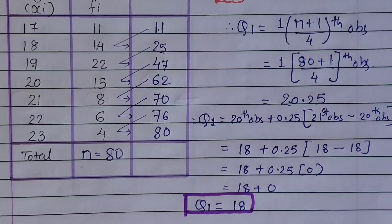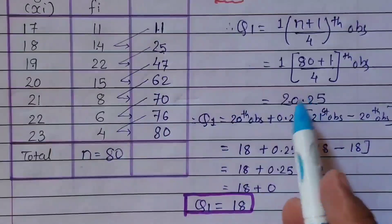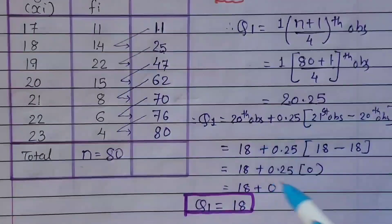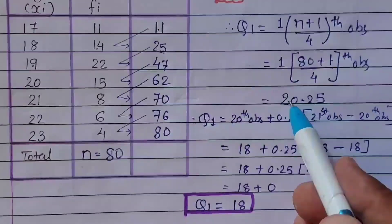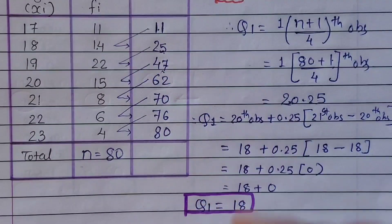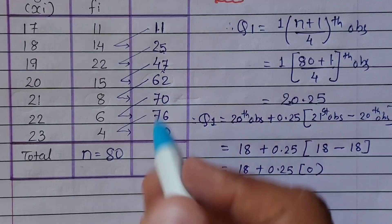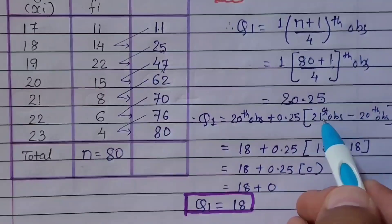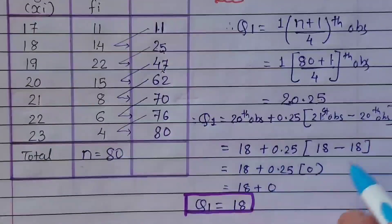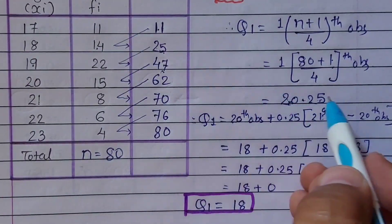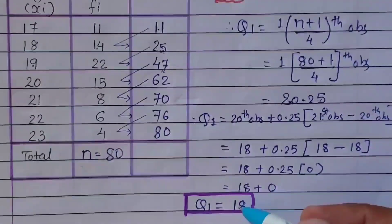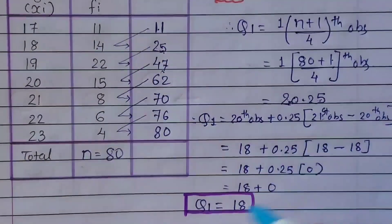Let me clarify one more thing. In this sum, even without applying the big formula, you can directly see that 20.25 sets here at 18, so Q1 = 18 directly. The shortcut is: if the number before the decimal point is exactly found in the CF, then apply the big formula. But if both the lower and upper observations fall in the same CF range — as here where 20 and 21 both fall within CF 25 — you get zero from the formula anyway, so you can directly read the answer from the table.